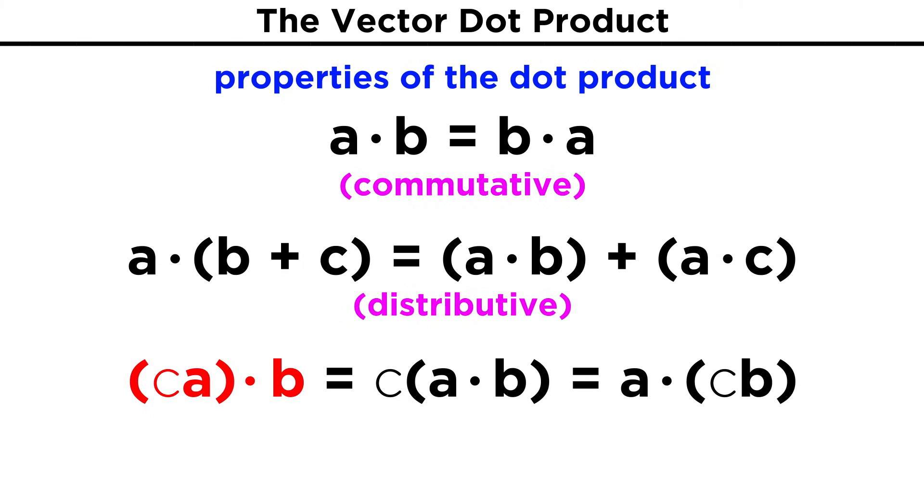A scalar times a vector involved in a dot product is the same as the scalar multiplied by the dot product, or the other combination of scalar and vector involved in the same dot product.